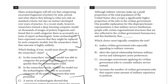Number seventeen: although military veterans make up a small proportion of the total US population, they occupy a significantly higher proportion of civilian government jobs. One explanation is that military service familiarizes people with organizational structures also reflected in civilian government bureaucracy, making them more likely to work in government. Things like following orders and reporting to a boss make civilian government jobs especially appealing to military veterans.